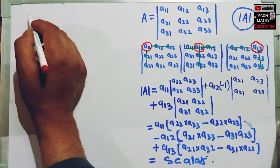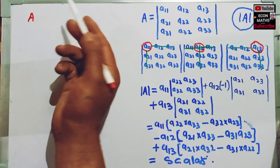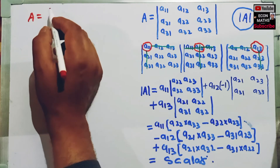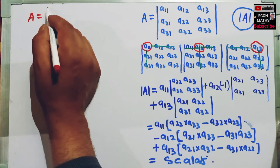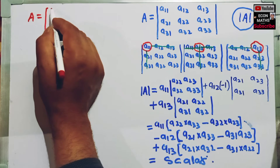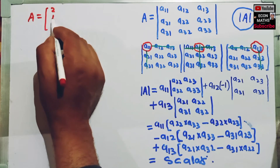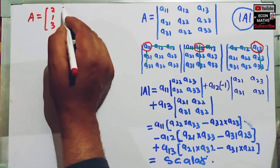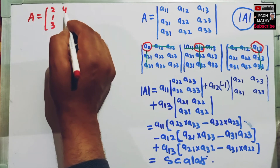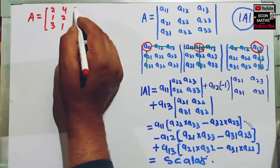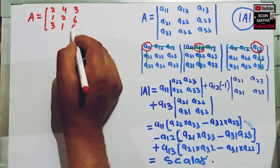If I have a 3 by 3 matrix: the first row is 2, 1, 3; the second row is 4, 2, 1; and the third row is 3, 6, 5.